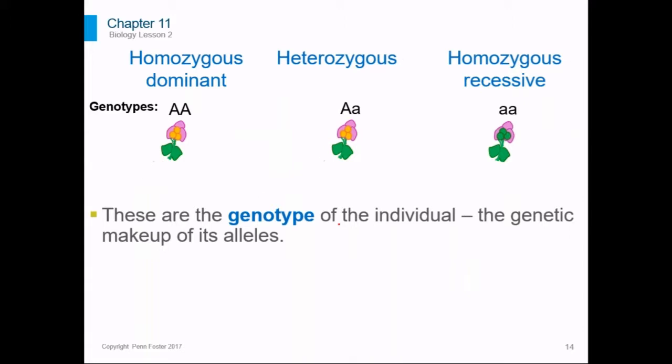There are terms to describe the setup of alleles that any individual has, and you need to know these terms. If they have two copies of a dominant allele — in this example, two alleles for yellow seeds — they are called homozygous dominant. If they have two copies of the recessive version of the allele, for example two alleles for green seeds, then they are homozygous recessive. And if they have two different alleles — in this example one yellow and one green — they are heterozygous.